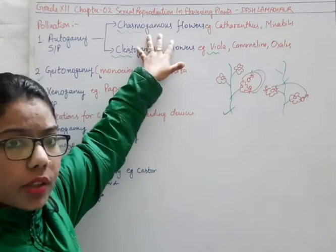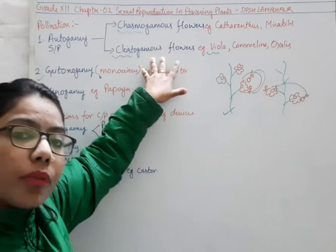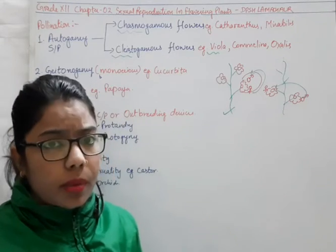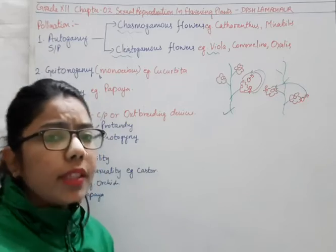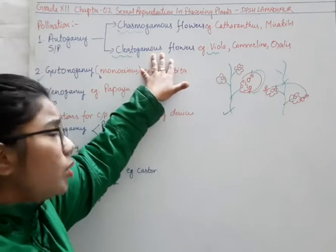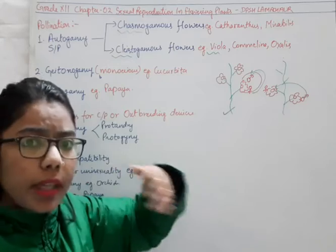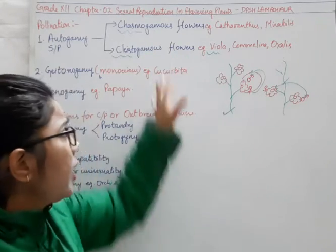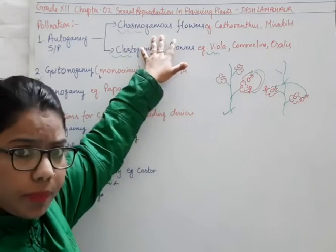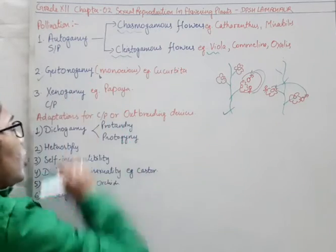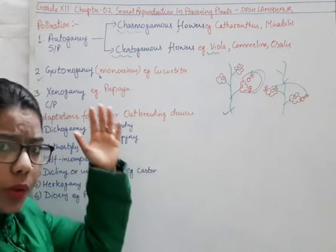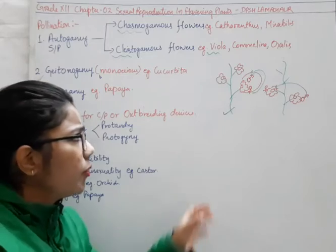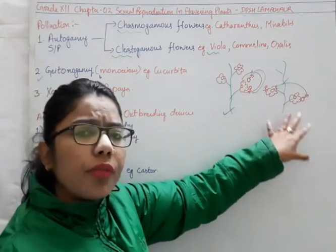If it happens with the help of cleistogamy, there will be no chance of new genetic makeup — no recombination can be possible in case of cleistogamy. So sometimes for some cases it can show the chasmogamous flower also, but the condition is that the flower will remain the same. Geitonogamy is a type of autogamy — or type of self-pollination — but we cannot say self-pollination because it is on a different flower.